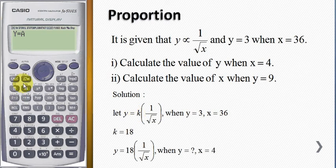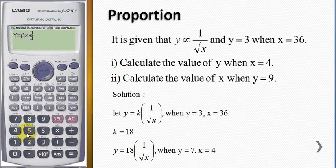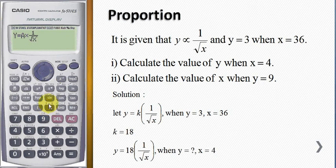So I enter y equals a times 1 over square root of x. By default, when I call solve, the calculator will solve for x. But now I'm looking for the value of a instead. So I put a comma, shift, comma, and a to tell the calculator I want to solve for a instead of x.